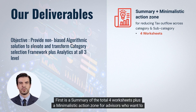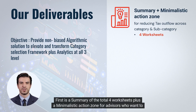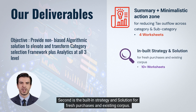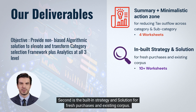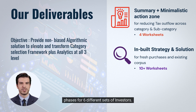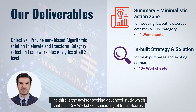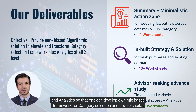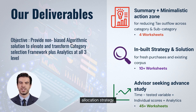First is a summary of the total four worksheets plus a minimalistic action zone for advisors who want to focus on reducing tax outgo across the category and subcategory. Second is the built-in strategy and solution for fresh purchases and existing corpus, with about 10 plus worksheets based on various scores and analytics rigorously tested across market phases for six different sets of investors. Third is the Advisor Seeking Advanced Study, which contains 45 plus worksheets consisting of input, scores, and analytics so that one can develop their own rule-based framework for category selection and devise a capital allocation strategy.